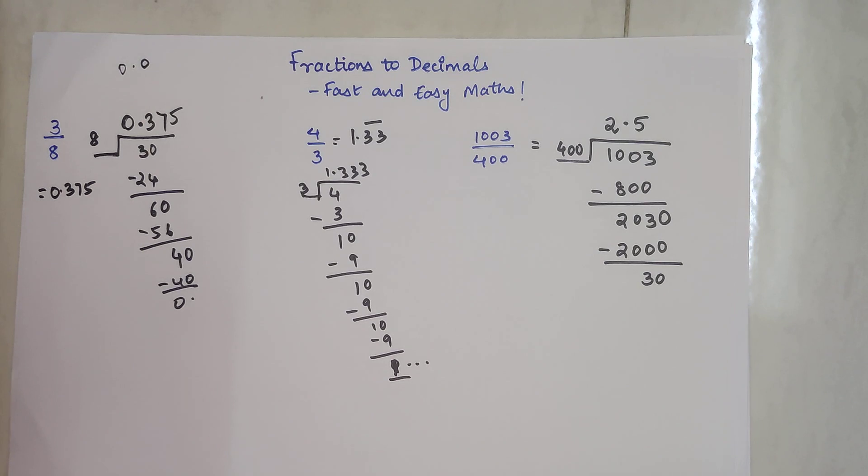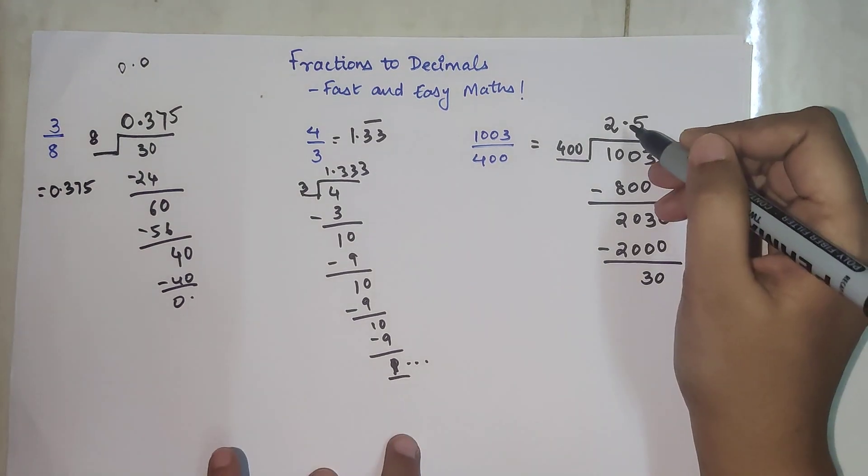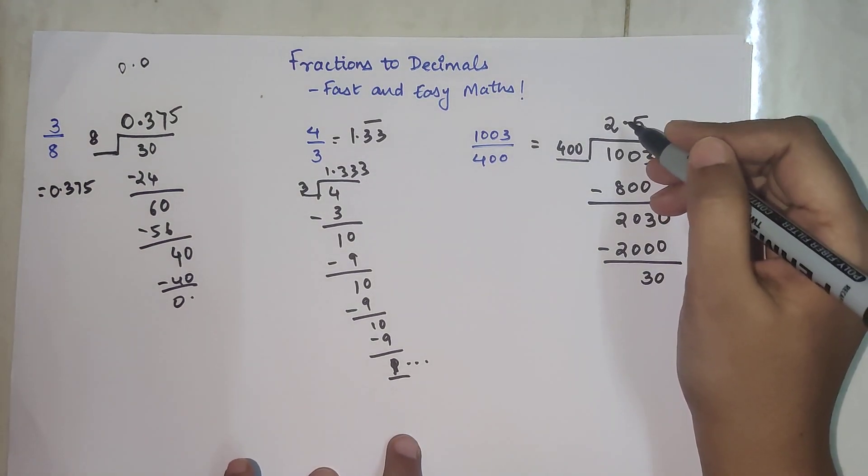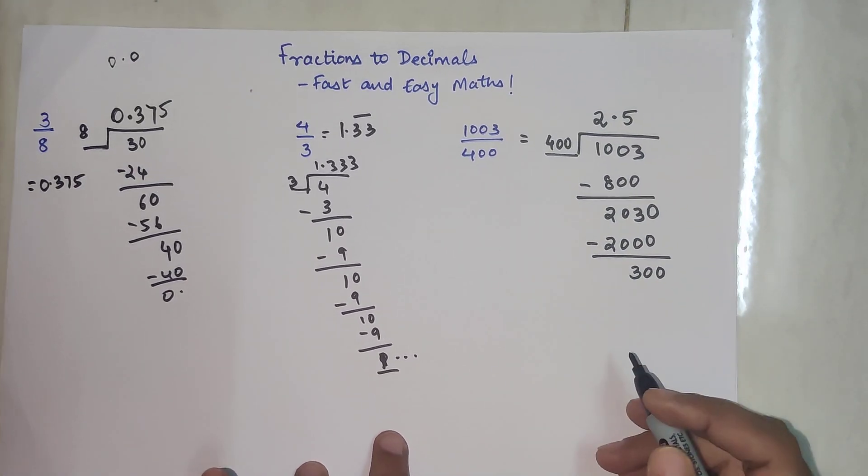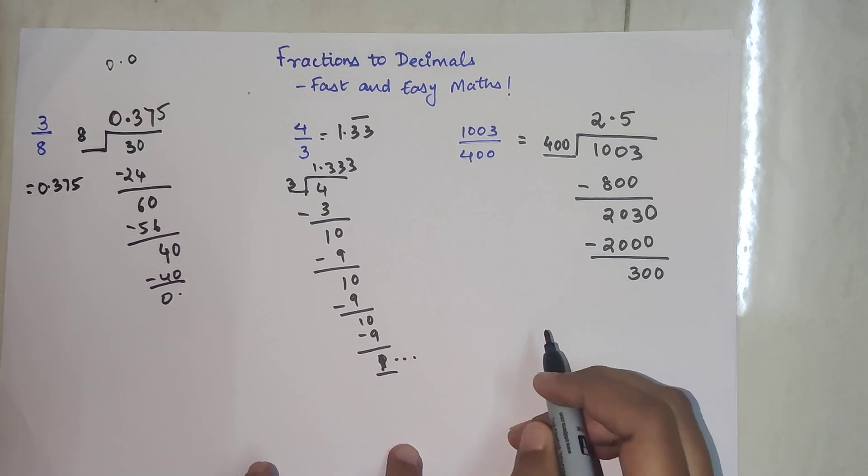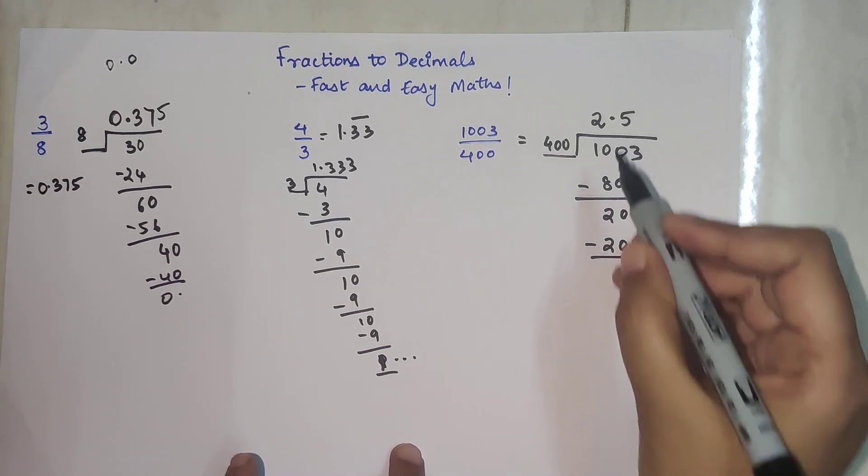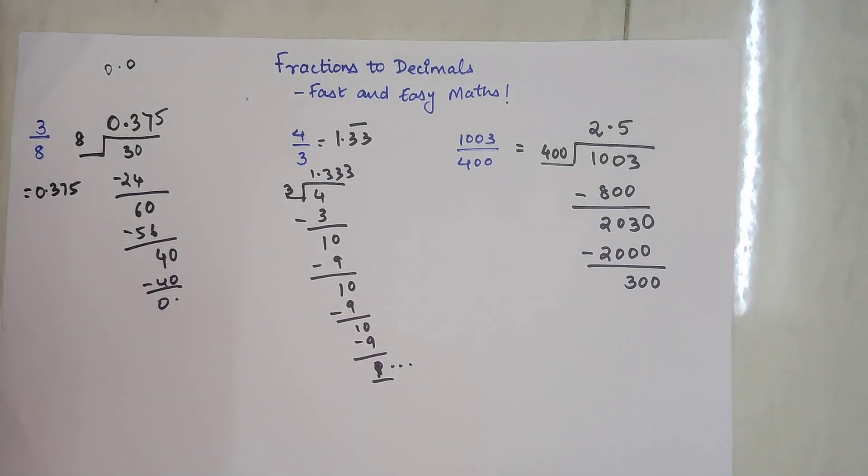Now this is where the trick begins. Actually, this is a concept you need to know. Since we've already taken a point, this is now becoming 300. Why I took 1 0? Because there was a decimal point, so I can take 1 0.